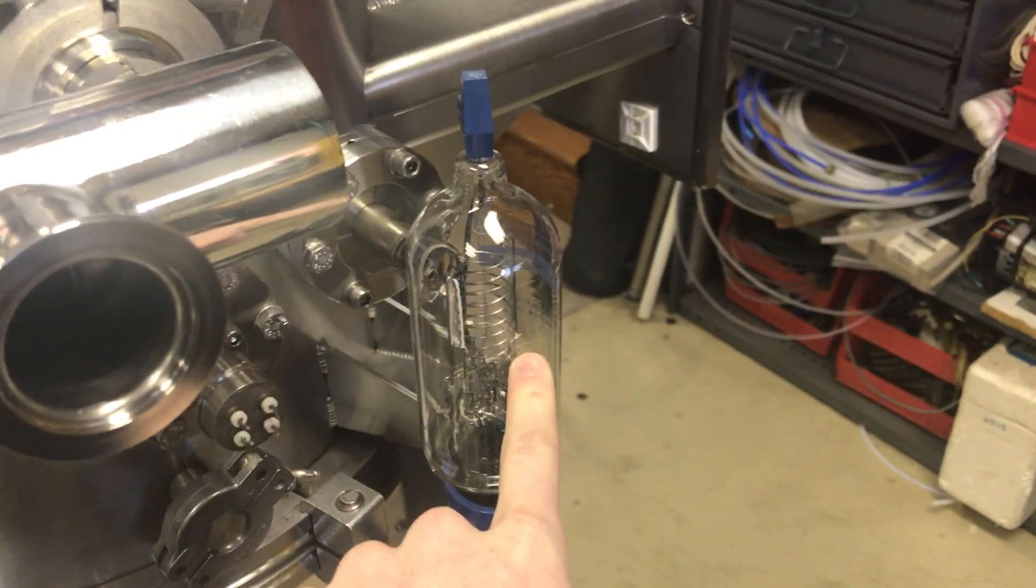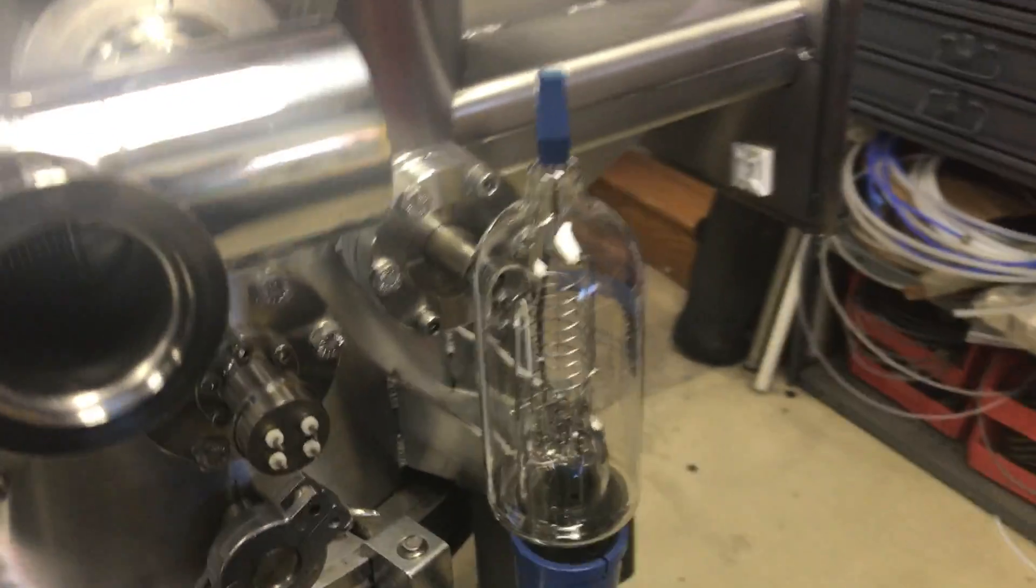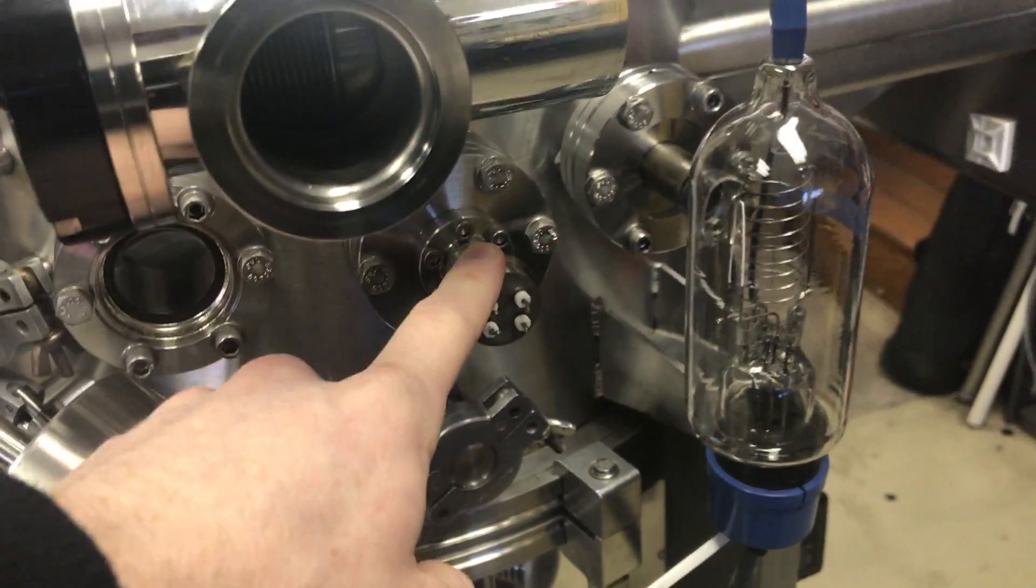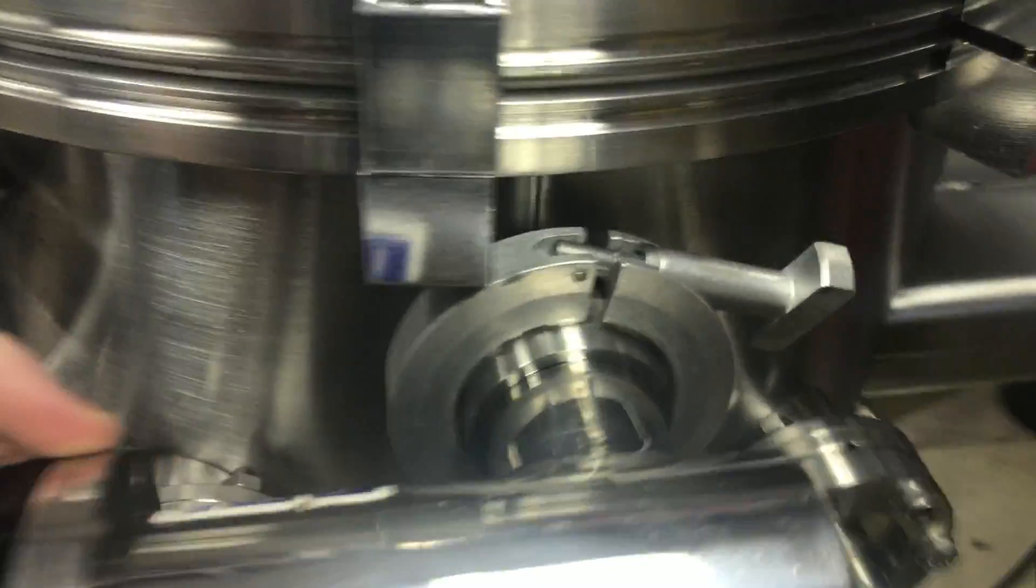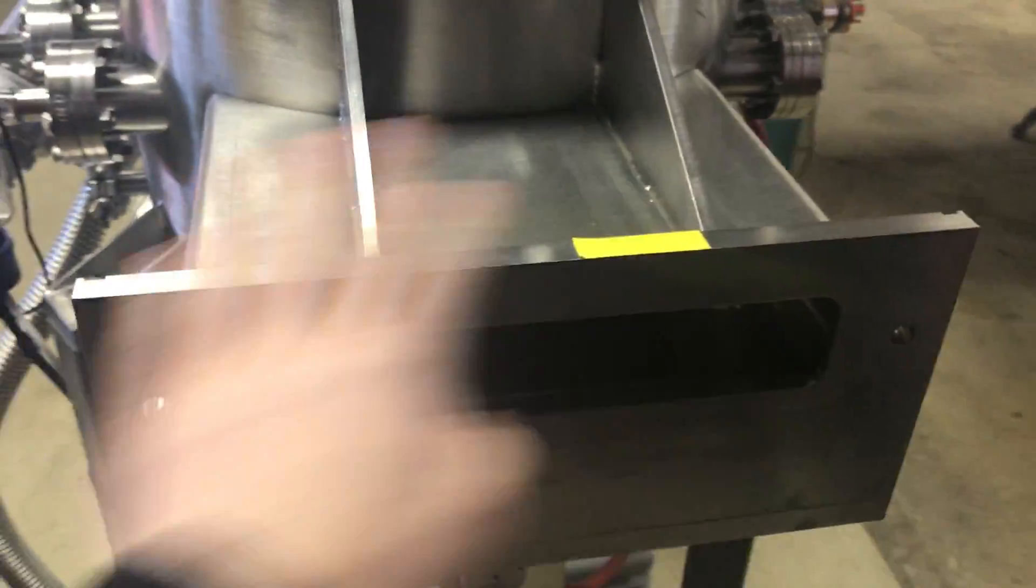And then this is my high vacuum gauge. This is a hot cathode ionization gauge. I have a 4-pin electrical feed-through, vent valve, the vacuum. I need to get this flange blocked off here.